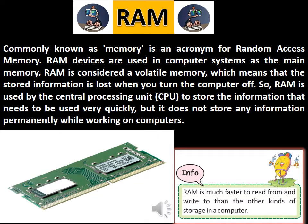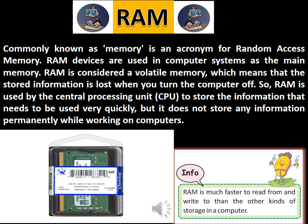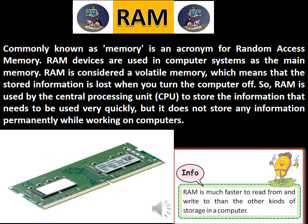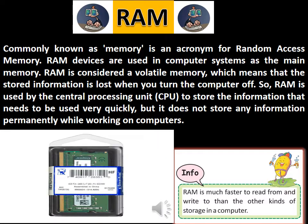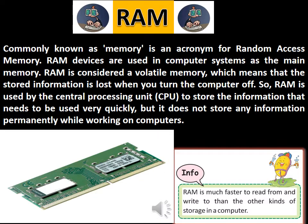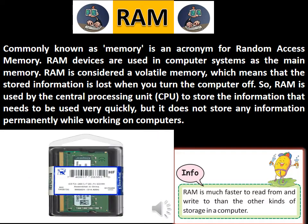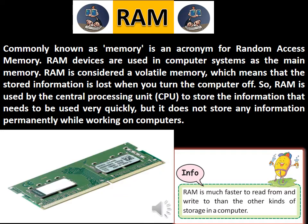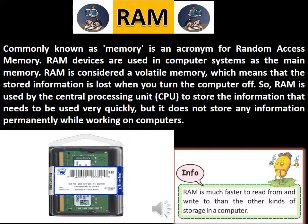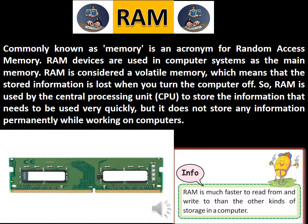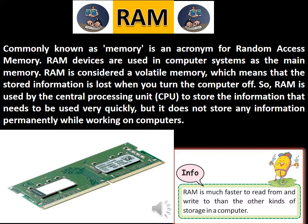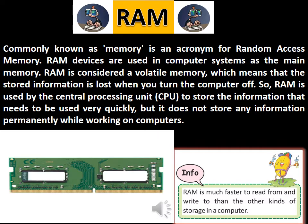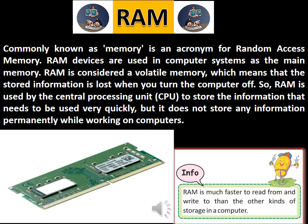RAM, commonly known as memory, is an acronym for random access memory. RAM devices are used in computer systems as the main memory. RAM is considered a volatile memory, which means that the stored information is lost when you turn the computer off. RAM is used by the central processing unit to store information that needs to be used very quickly, but it does not store any information permanently while working on the computer.